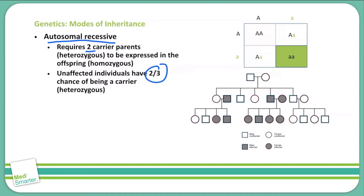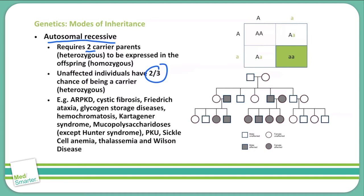Examples of autosomal recessive conditions include autosomal recessive polycystic kidney disease, cystic fibrosis, Friedreich's ataxia, glycogen storage diseases, hemochromatosis, Kartagener's syndrome, all of the mucopolysaccharidoses except for Hunter's syndrome, phenylketonuria, sickle cell anemia, thalassemias, and Wilson's disease.